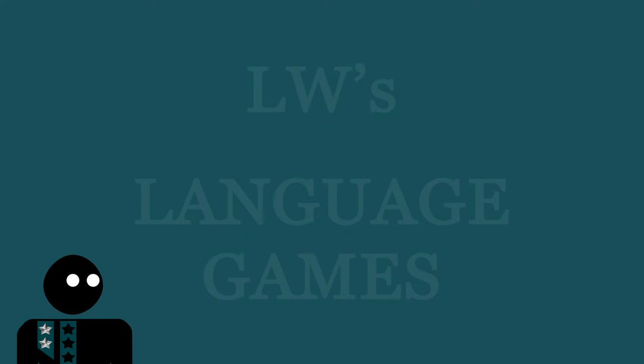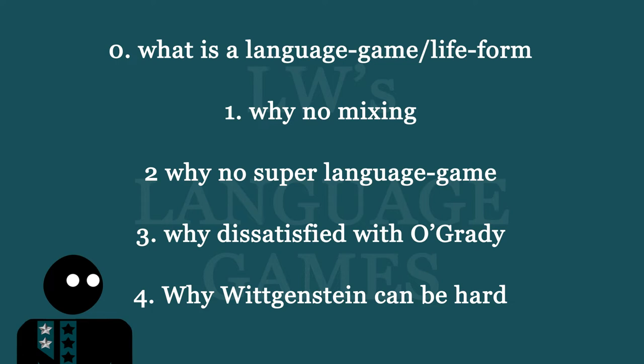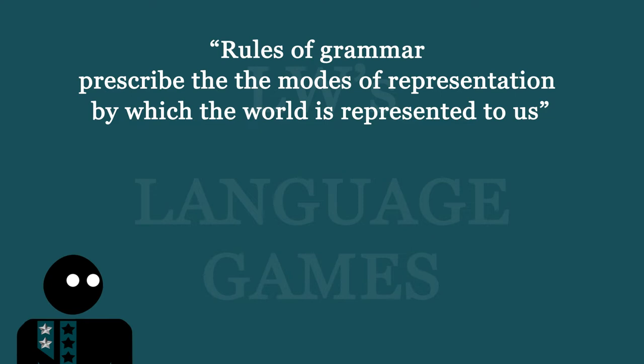So what we're really going to do here is explain language games insofar as pointing out how they connect to O'Grady's points and some of my own. The goals are: first and foremost, what is a language game slash life form; connecting to two points O'Grady rightly makes — why we shouldn't mix language games, and why there is no super language game that governs all others. I'll also explain why the ending line of O'Grady's writing is potentially harmful.